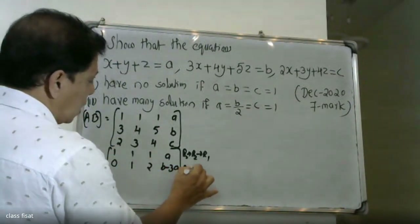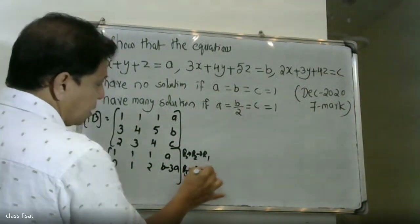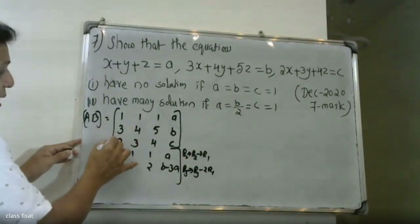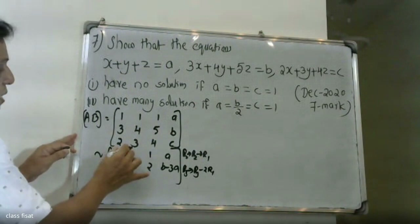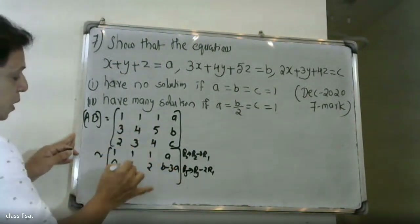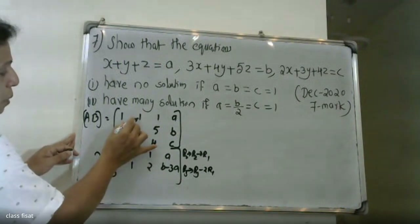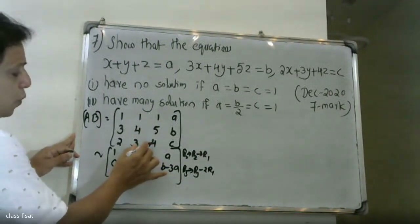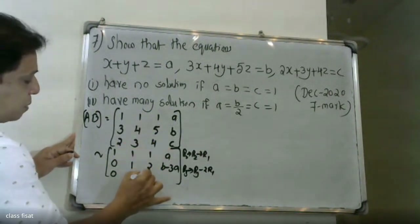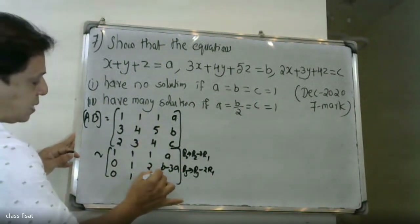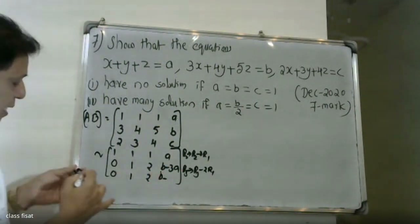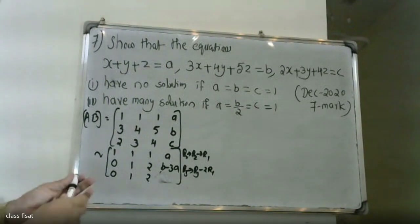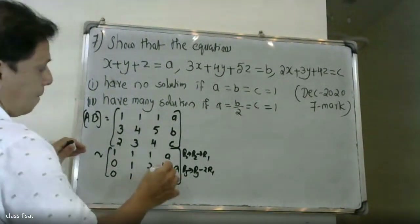R3 changes to R3 minus 2R1. The third row: 2 minus 2 gives 0, 3 minus 2 gives 1, 4 minus 2 gives 2, and then c minus 2a.